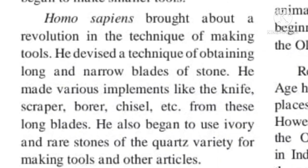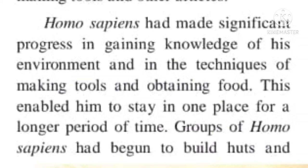Homo sapiens changed the technique of obtaining long and narrow blades of stone. He made various implements like knives, scrapers, borers, and chisels from these long blades. He also began to use ivory and rare stone of quartz variety for making tools and other articles. Homo sapiens made great progress in gaining knowledge of his surroundings and the environment, and in the techniques of making tools and obtaining food. This enabled him to stay in one place for a longer period of time, and they started living in groups and building huts.